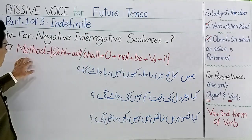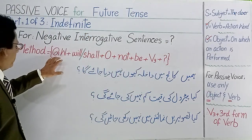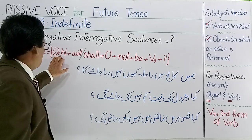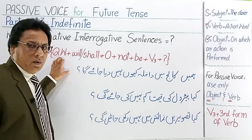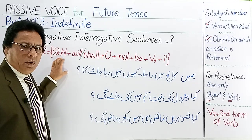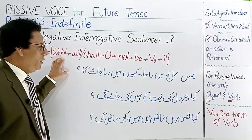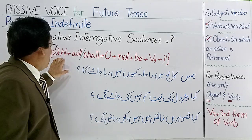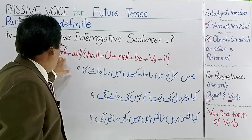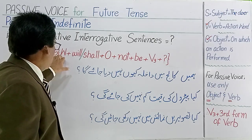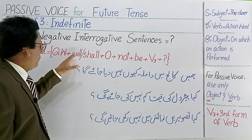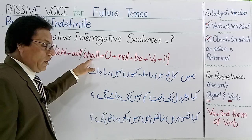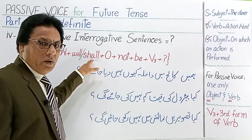Then the method: there comes a questioning word — where, when, why. First of all, at the start of the sentence, then will or shall.